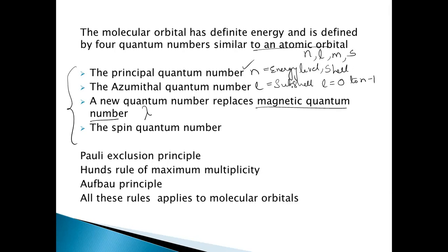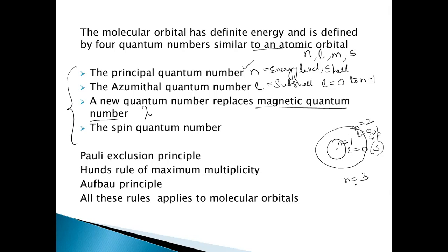For example, if N equals 1, L equals 0, which corresponds to the S orbital. If N equals 2, L equals 0 and 1, corresponding to S and P subshells. If N equals 3, L equals 0, 1, and 2, corresponding to S, P, and D subshells.